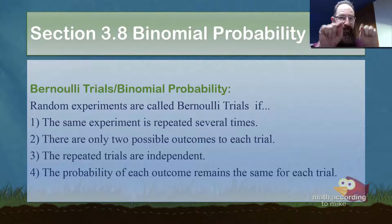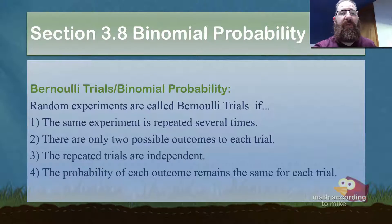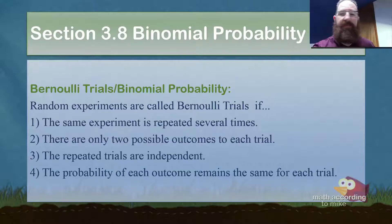For combinations, you can have large parentheses with an N over an R — that's him. But if you don't want to use that and just want to use the capital C with the N comma R, that's totally fine.